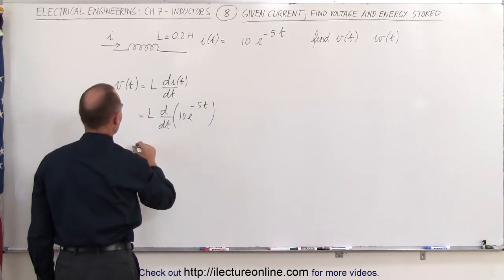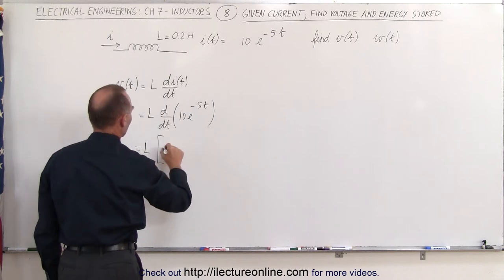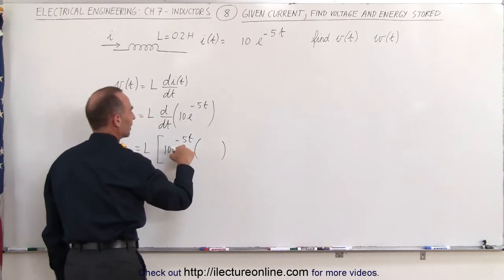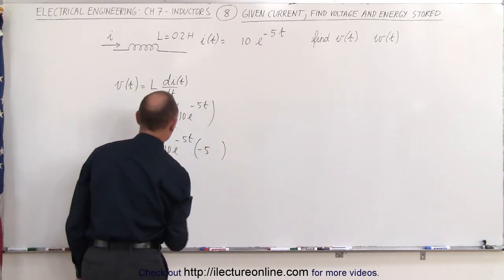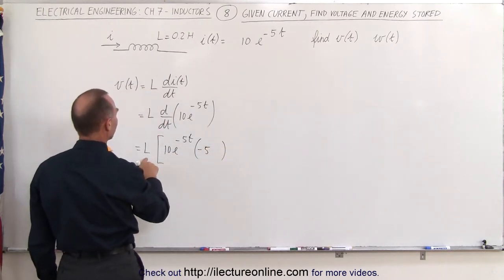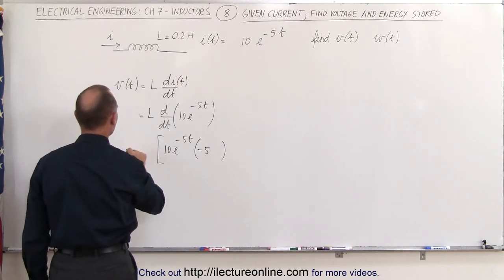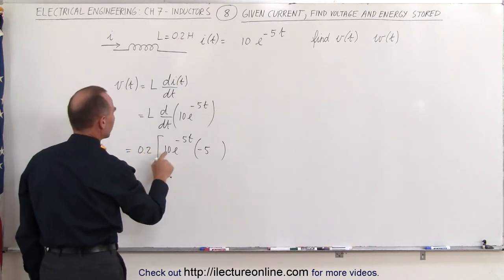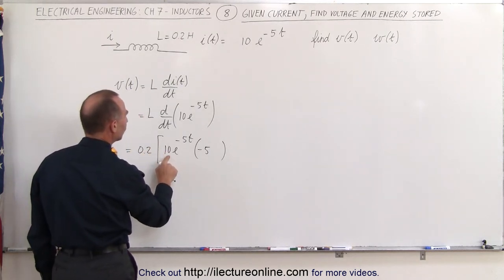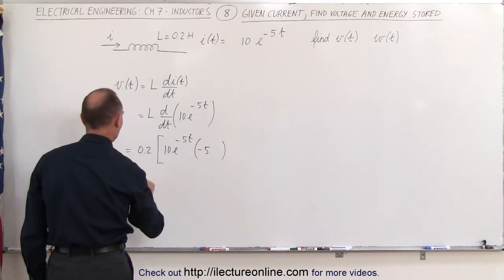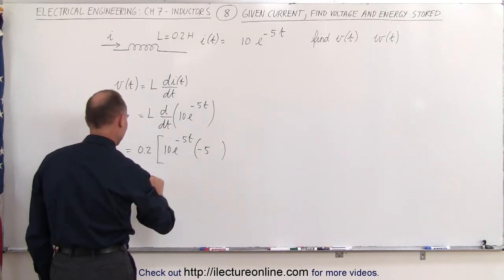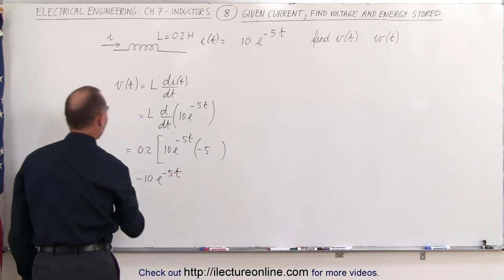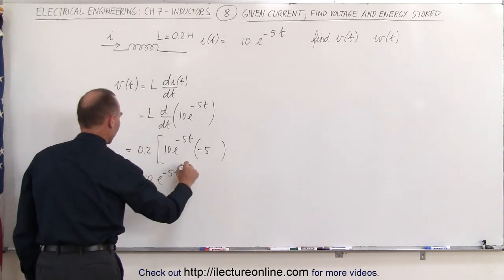Taking the derivative, this is equal to L times 10e to the minus 5t, times the derivative of the exponent which is minus 5. We put in a value for L — L is equal to 0.2 henrys — so we get 0.2 times 10 times negative 5, which equals negative 10. So this gives us V(t) equal to negative 10e to the minus 5t, and that is the voltage as a function of time.